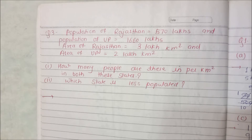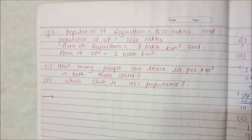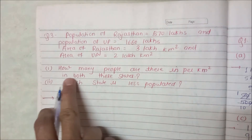Hello friends, welcome back to your channel Beginners Point. We will see Class 7 Maths Exercise 8.1, Question Number 3. Population of Rajasthan is 570 lakhs and population of UP is 1660 lakhs. Area of Rajasthan is 3 lakh km² and area of UP is 2 lakh km².